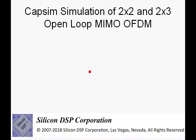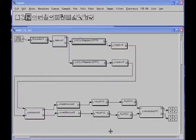In the following section we will actually run a CAPSIM simulation of a 2x2 and 2x3 open-loop MIMO OFDM system. We will start with a 2x2 system, then add another receive chain to develop a 2x3 system and compare the simulation results.